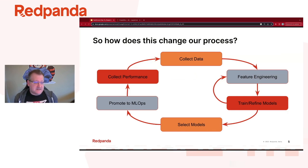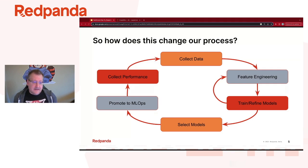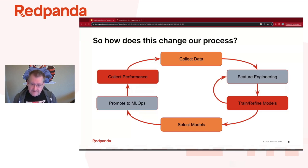Strangely enough, the process doesn't change a lot — it's more the cadence of how you do things that changes. We're still going to collect our data, but instead of collecting it a month at a time, we may collect and aggregate it a couple minutes or even seconds at a time. Those features will get engineered. We're still going to select our best models and promote those to live in some type of ML operations. But it all runs a little differently when doing real-time event data versus large batch jobs.